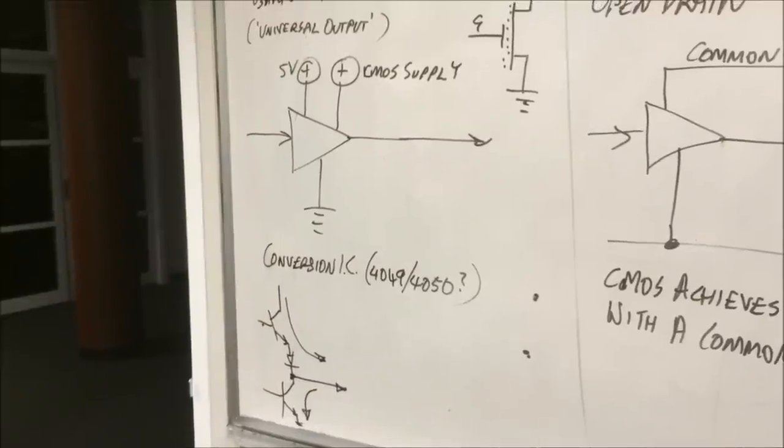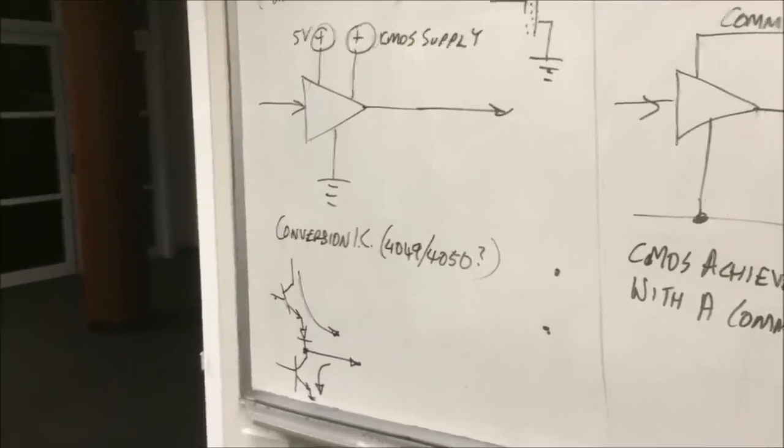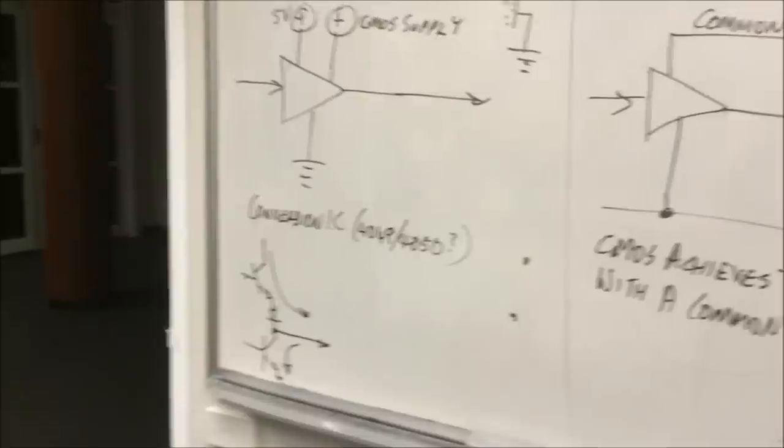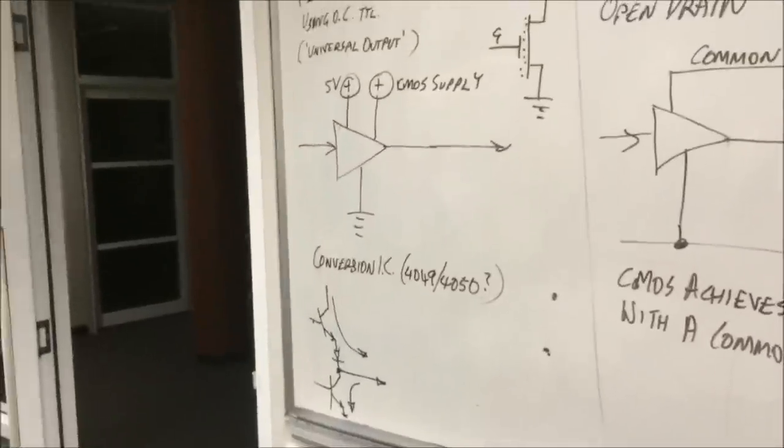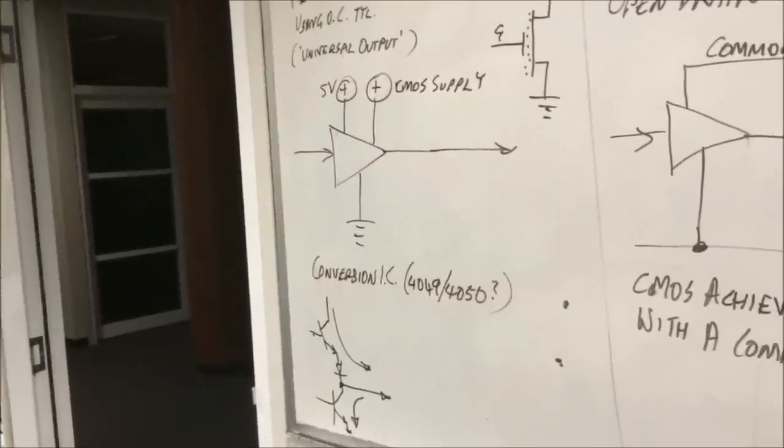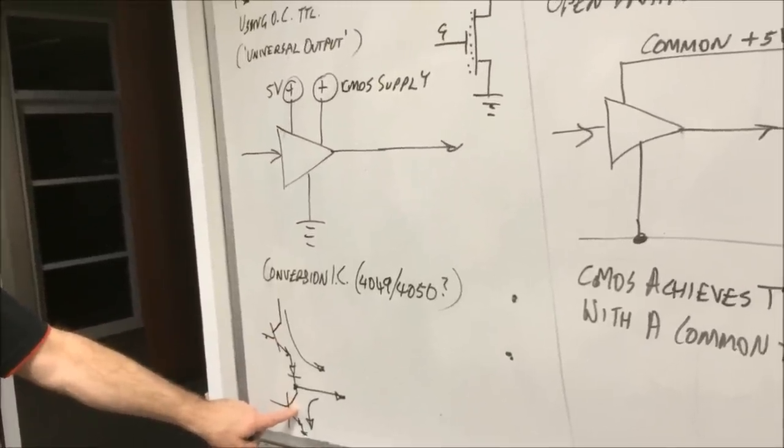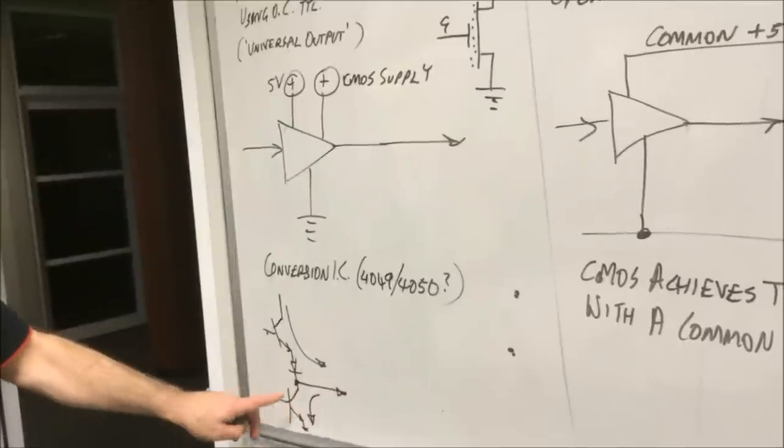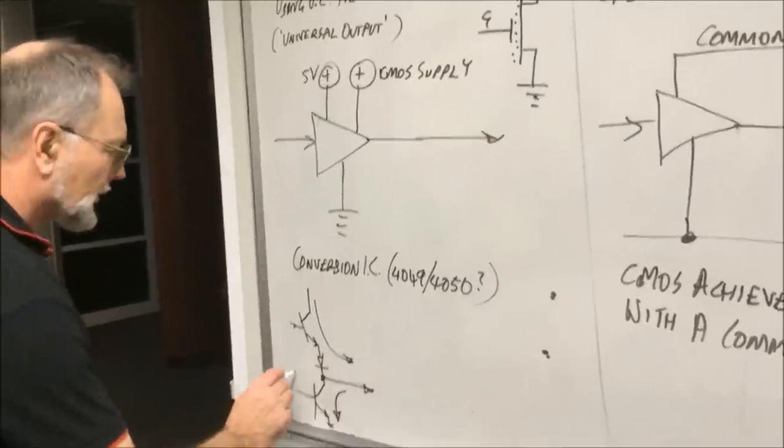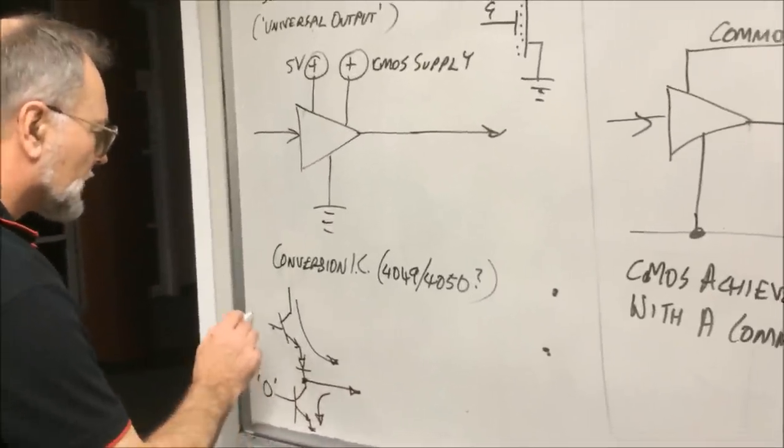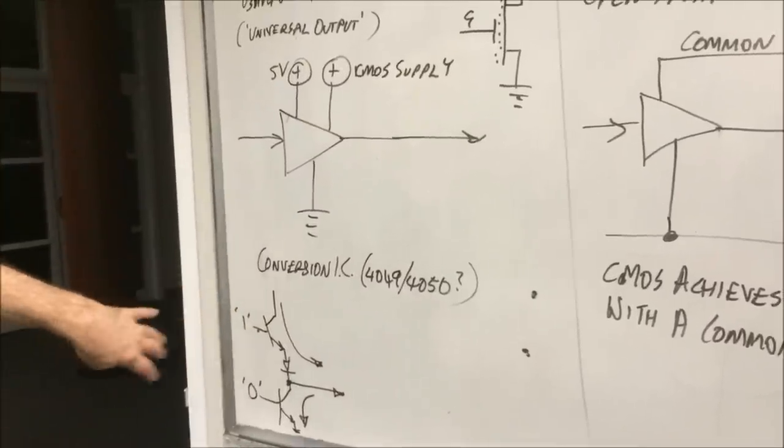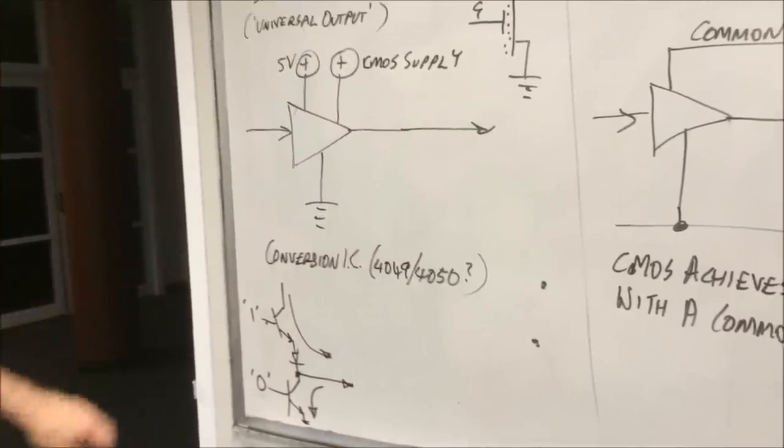Either that one is on or that one is on, can't have both. So like we say it's a totem pole output. A totem is a big pole with heads on the pole. So here's the totem, there's one head, there's the other head. There's either or, this one provides a zero, this one provides a one. There's extra logic behind that, other transistors.